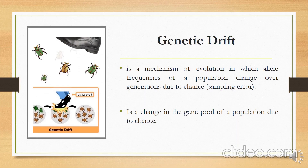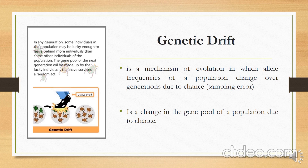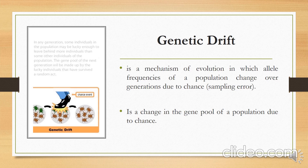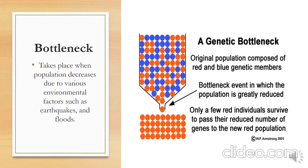Genetic drift, along with natural selection, mutation, and migration, is one of the basic mechanisms of evolution. In each generation, some individuals may, just by chance, leave behind a few more descendants than other individuals. The genes of the next generation will be the genes of the lucky individuals, not necessarily the healthier or better individuals. It is defined as a change in the gene pool of a population due to chance.